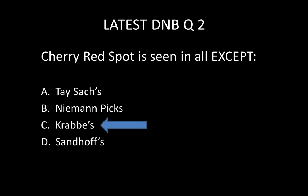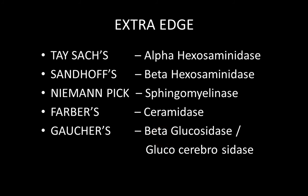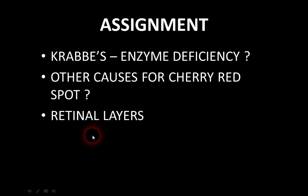The answer to the second MCQ question: cherry red spot is NOT seen in Krabbe's disease. Krabbe's and Fabry disease are grouped together as conditions where cherry red spot is absent. So among the options, Krabbe's is the correct 'except' answer. If Gaucher's had been given instead of Sandhoff's, that might have been the answer, but with Krabbe's as an option, choose Krabbe's. Assignments: enzyme deficiency in Krabbe's, other causes of cherry red spot, and detailed retinal layer anatomy.